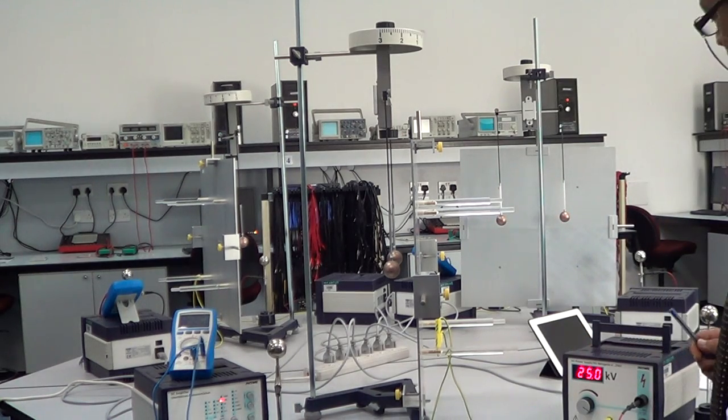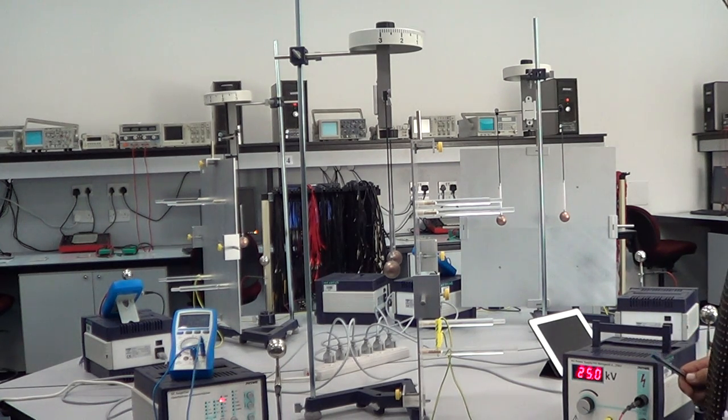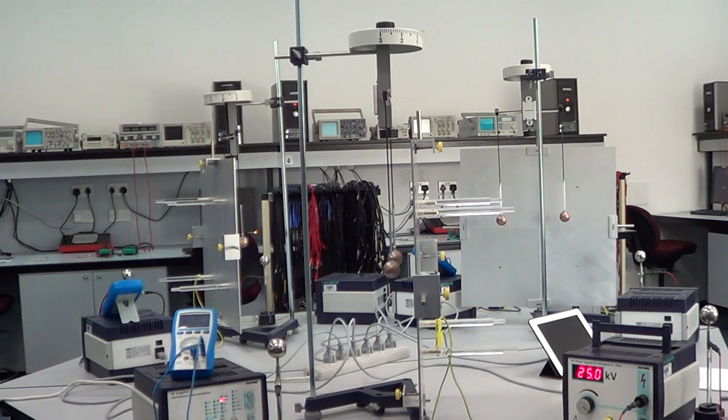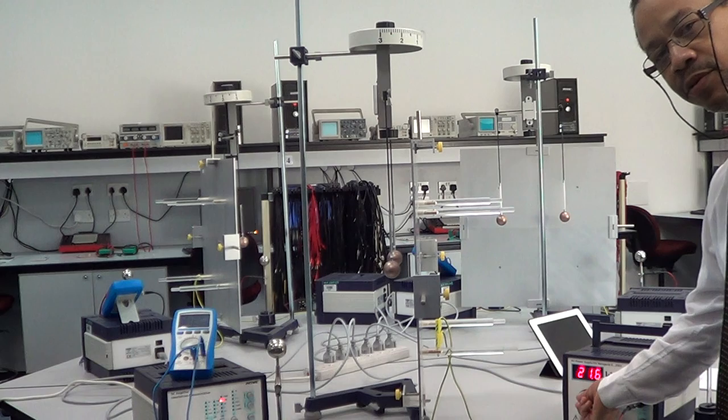Over here is a voltage supply. The purpose of this voltage supply is to supply charge to this conducting ball. We can control the amount of charge by changing the values of the kilovolts.